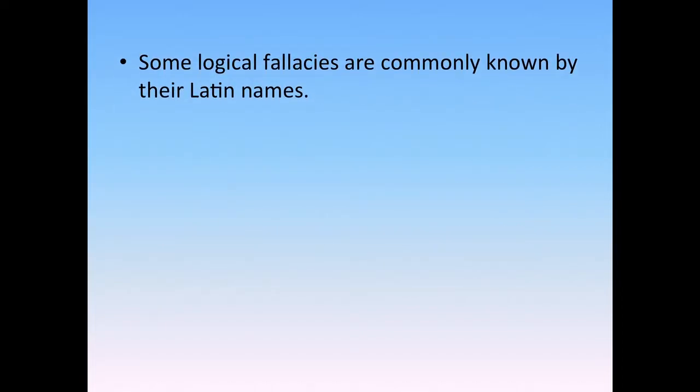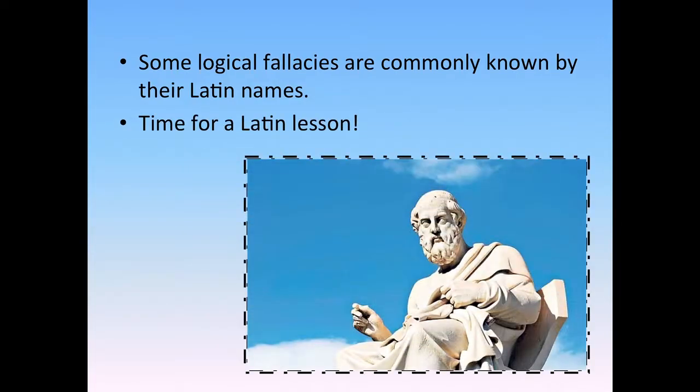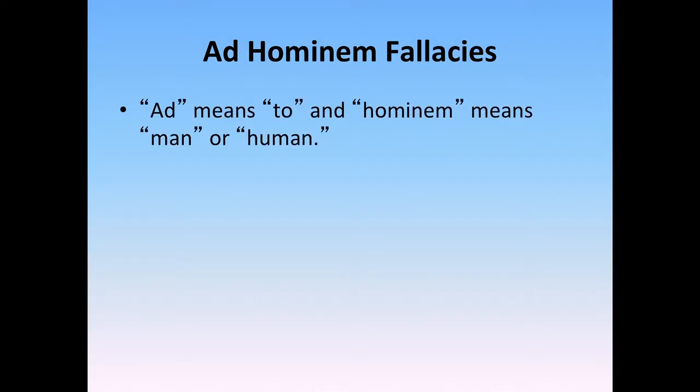Some logical fallacies are commonly known by their Latin names, so we'll be using some Latin terms in today's lecture. I'll make sure to define them pretty well for you. Let's begin with the first kind of fallacy, referred to as an ad hominem fallacy. Ad means 'to,' and hominem means 'man' or 'human.' That root word 'hom' might remind you of homo sapien, which means man.